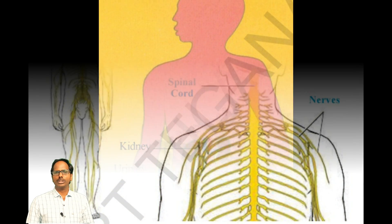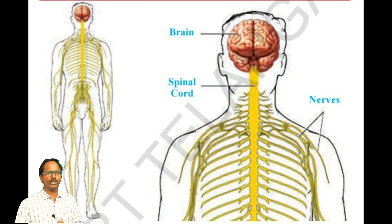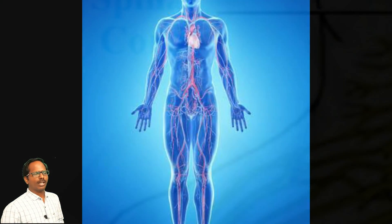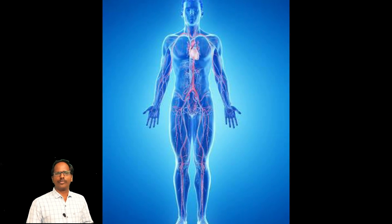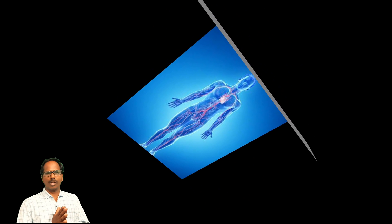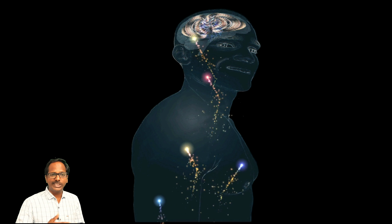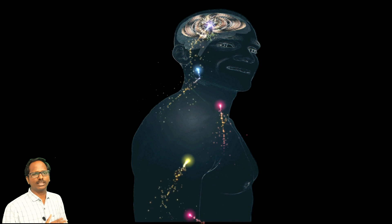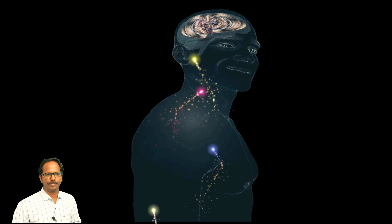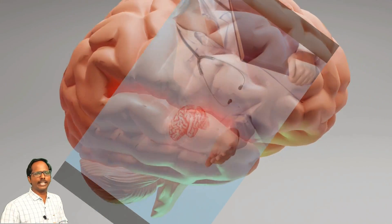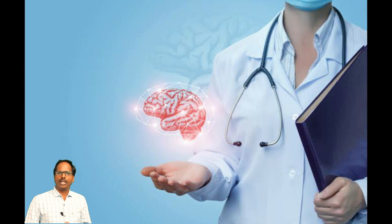Now it is time to know about another most important organ system in our human body — the nervous system. Children, observe the picture on the screen. Each and every part of our body has nerves. They pass on the information obtained from the sense organs to the brain. The brain analyzes this information and instructs the parts of the body through the nerves. The brain functions properly when we take a nutritious diet. The doctor who treats diseases related to the nerves and brain is called a neurologist.